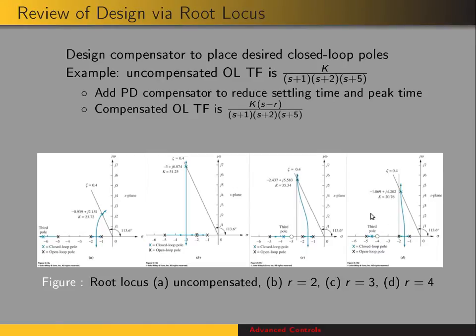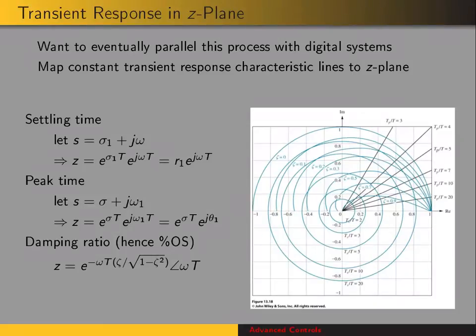Now we want to move into discrete systems, their transient response, and eventually into selecting the gain and designing compensators. This is the z-plane equivalent of the lines of constant characteristics we saw in the S-plane.